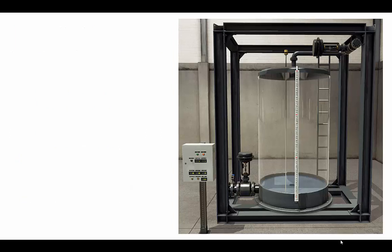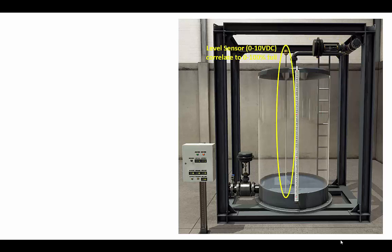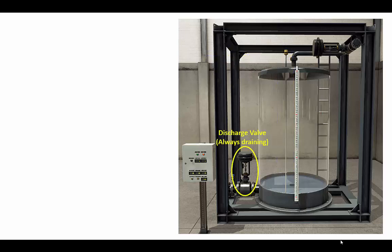I've set up in Factory I/O this tank filling station. It includes an analog fill valve that needs a 0-10 volt DC signal. It also includes a level sensor which transmits a 0-10 volt DC signal, which we'll need to scale to represent the level in the tank between 0 and 100% full. It also includes a discharge valve that I've set to always be draining — like a manual valve that someone has opened.